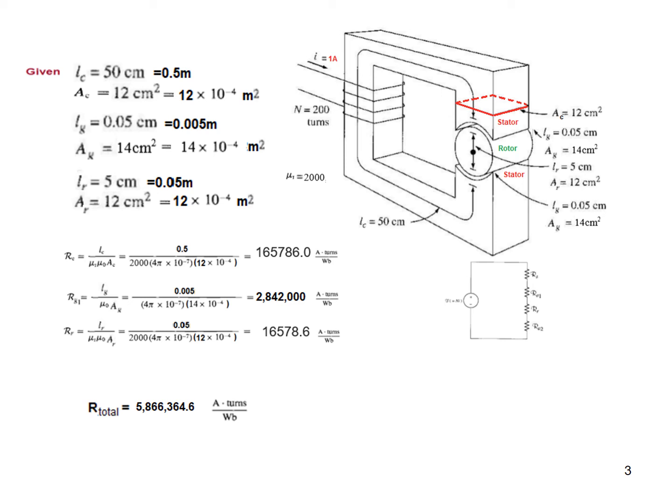The third is for the rotor. The rotor is made of metal so it will be μr and μ₀. Length of the rotor is 0.05, μr is 2000, and this is the area of cross-section for the rotor. Solving we find 16,578.6 as the reluctance for the rotor. Since the second air gap is the same, we'll just duplicate that: the lower air gap has the same result.